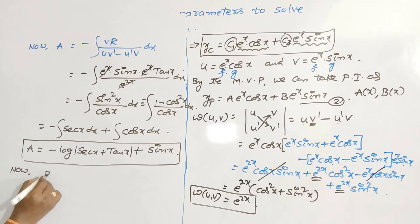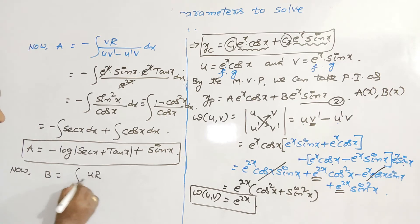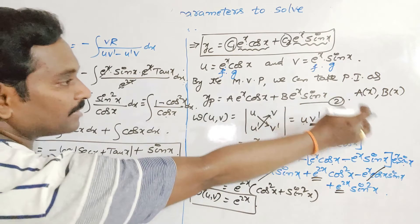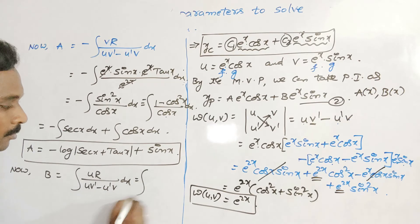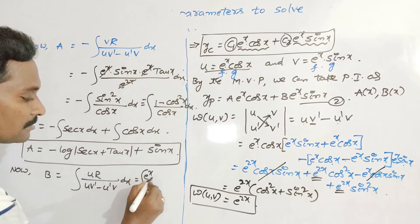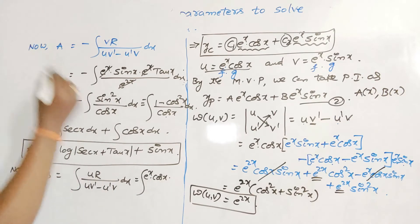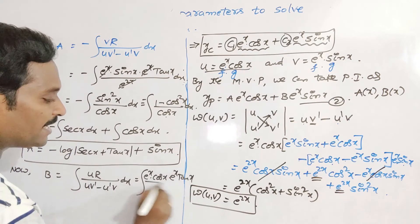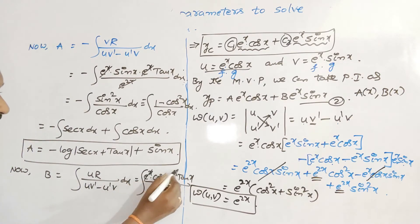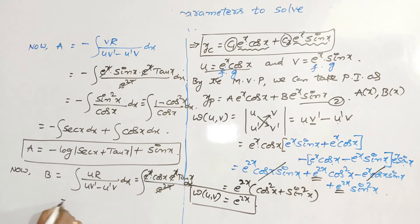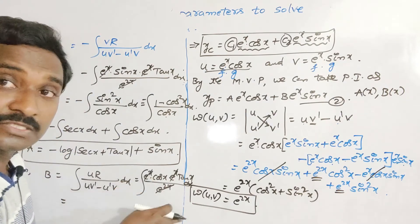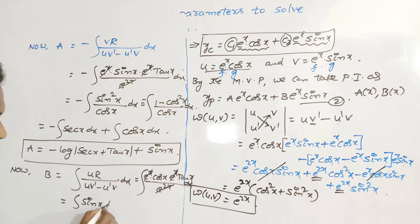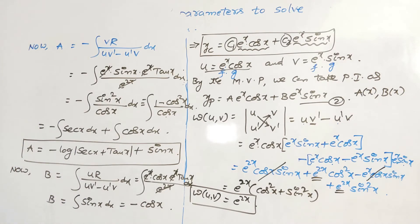The formula for b is: b = ∫(u·R / W) dx. Substituting u = eˣ cos x, R = eˣ tan x, W = e²ˣ: b = ∫(eˣ cos x · eˣ tan x / e²ˣ) dx = ∫ cos x · tan x dx = ∫ sin x dx = −cos x. This is the value of b.